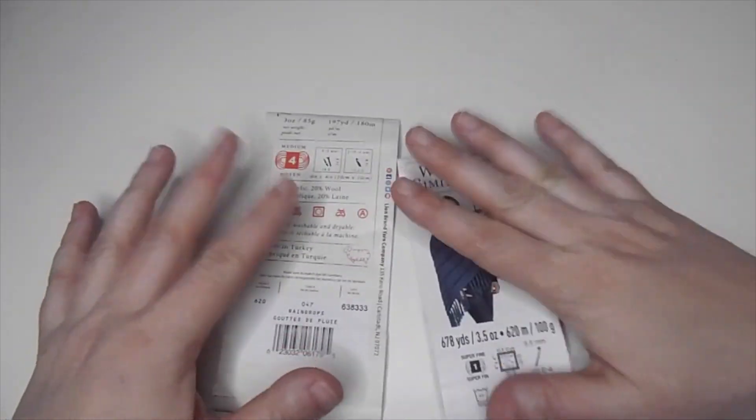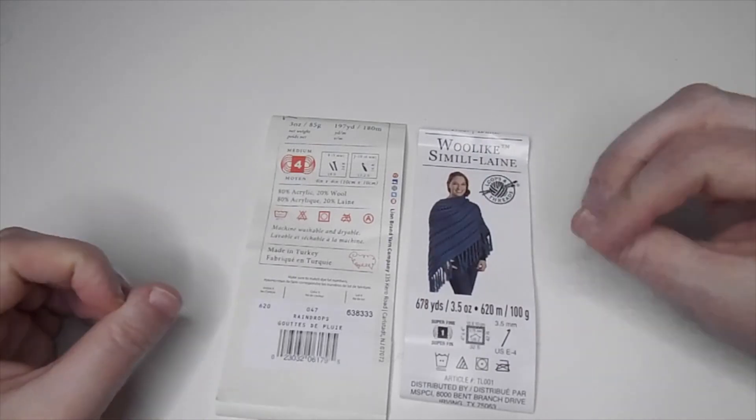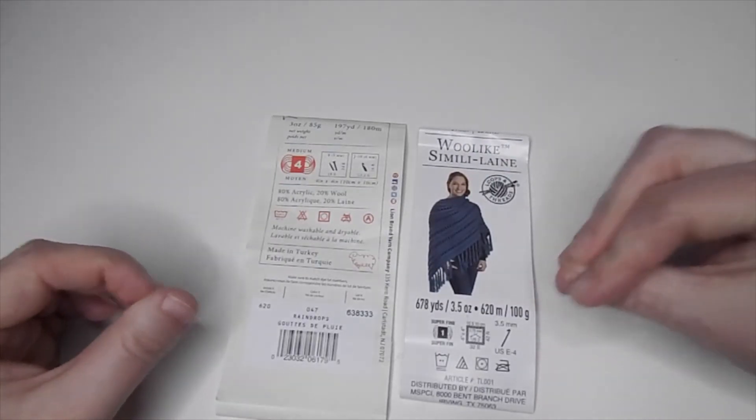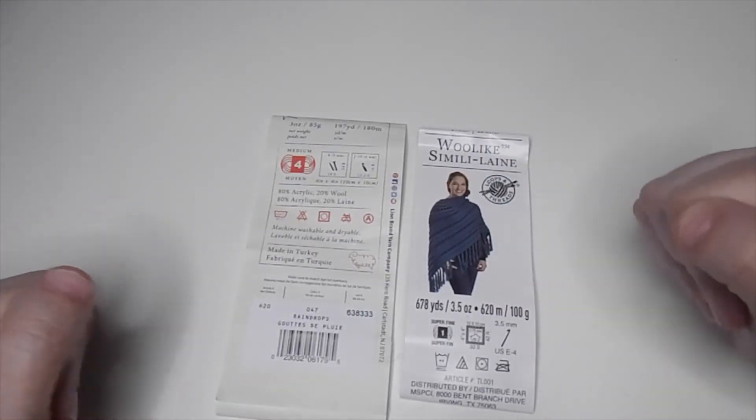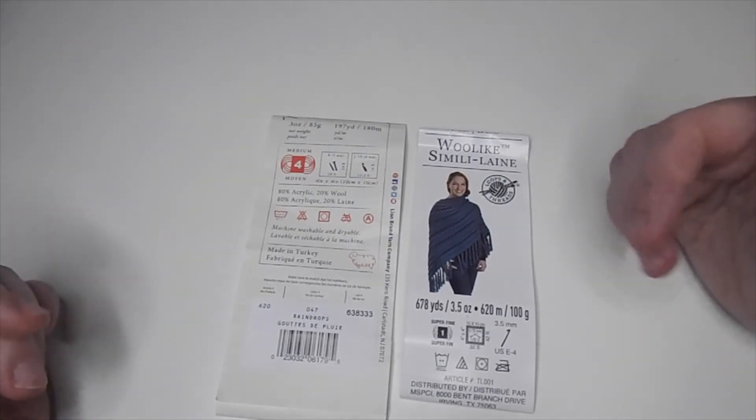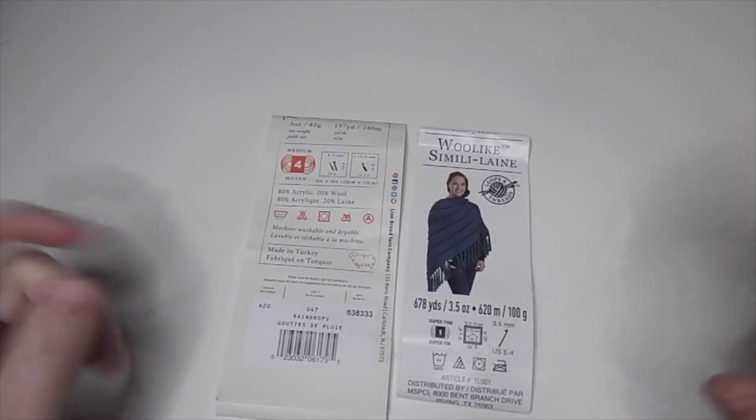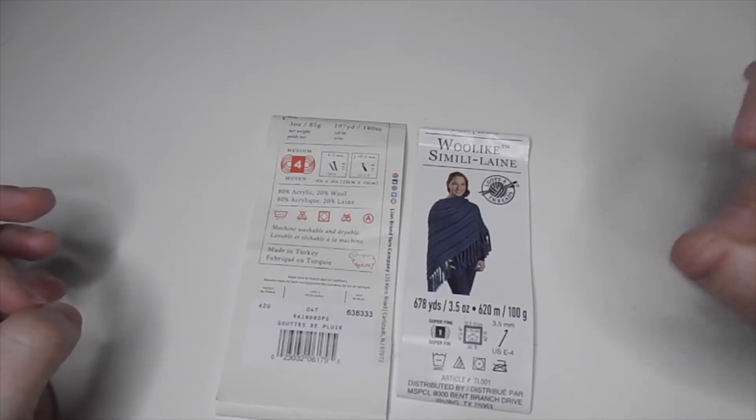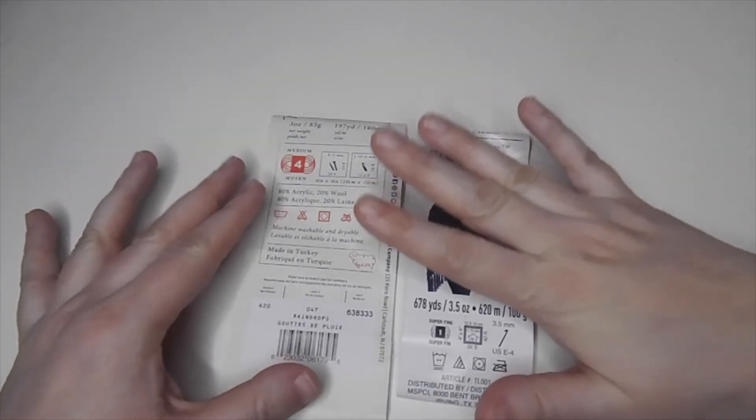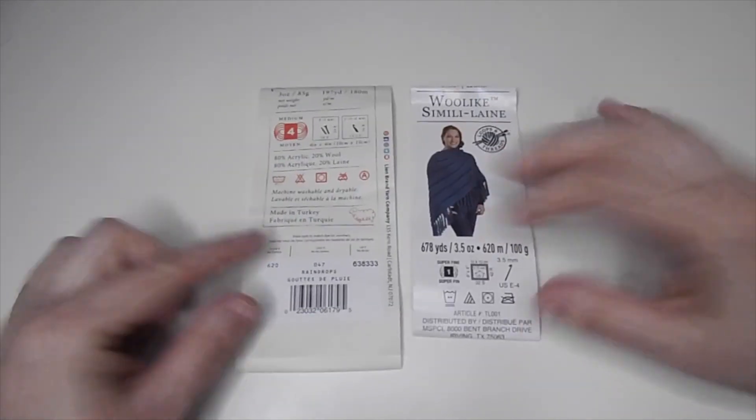You have a lot of information on tags and you need to read them carefully. If you want to make something that has a specific gauge, you can check here. But it's not the same—you always need to do a gauge swatch. But you can have some information on your yarn label.